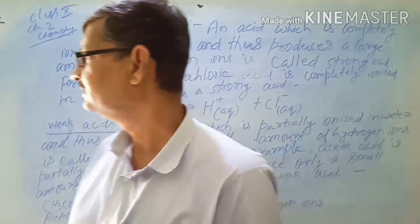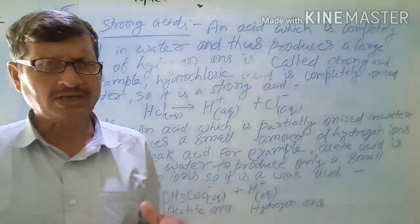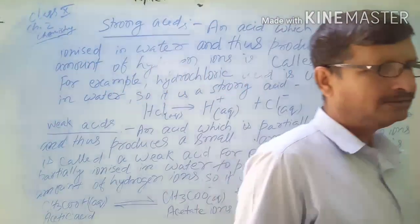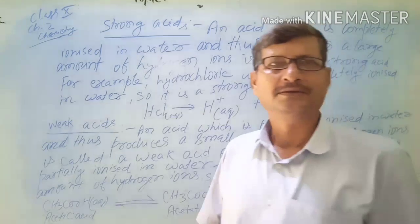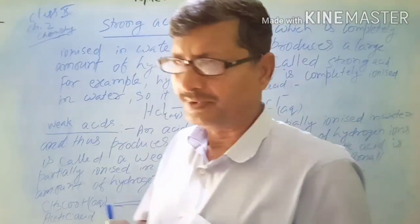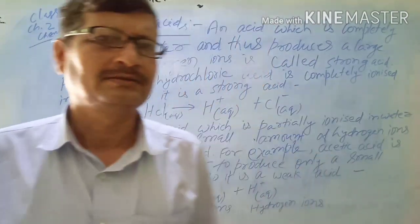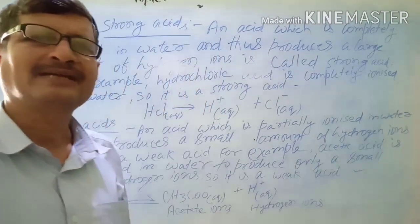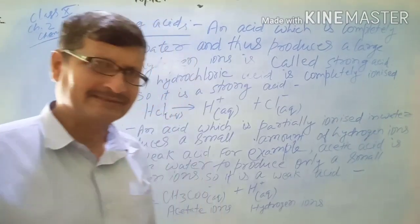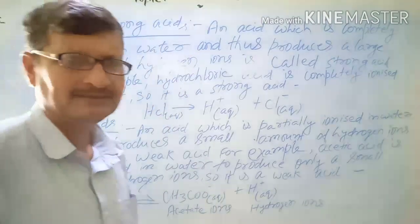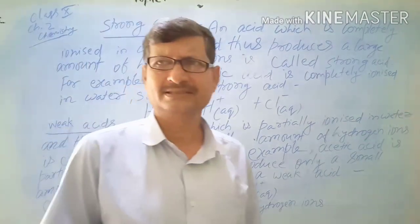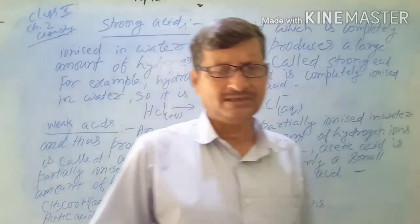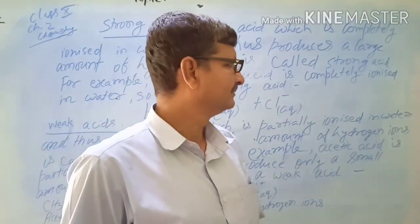Whereas naturally occurring acids are weak acids. For example, acetic acid, citric acid, lactic acid, tartaric acid, and oxalic acid — these all are weak acids.